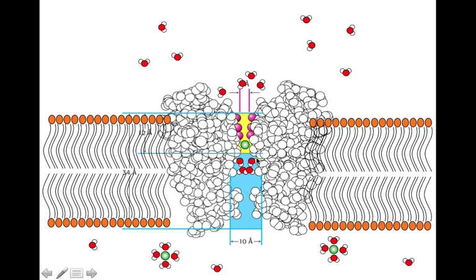The breaking of the bonds here is called desolvation because it's losing its water shell, and the making of bonds in the selectivity filter of the channel is called resolvation. If the resolvation energy is greater than the desolvation energy, then potassium will flow through the channel. Here is bond breaking and bond making — desolvation and resolvation. And it goes through to the other side and once again forms its water shell around itself.